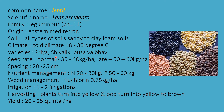Varieties are Priya, Shivalik, and Pusa Vaibhav. Seed rate is 30 to 40 kg per hectare for normal sowing and 50 to 60 kg for late sowing. Spacing is 20 to 25 cm. Nutrient management: 20 to 30 kg N in split doses and 50 to 60 kg P in basal doses. Weed management uses fluchloralin at 0.75 kg per hectare. Irrigation: 1 to 2 times for the entire crop. Harvesting when plants and pods turn yellowish-brown; yield is 20 to 25 quintal per hectare.